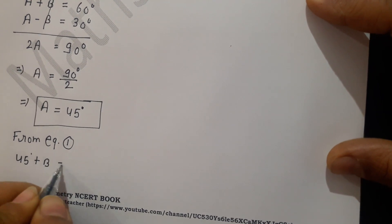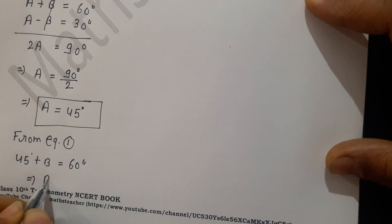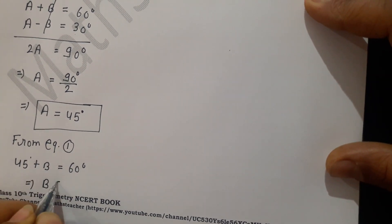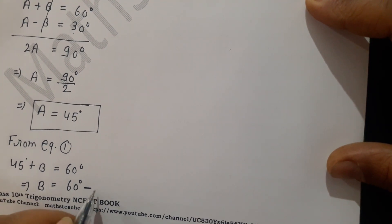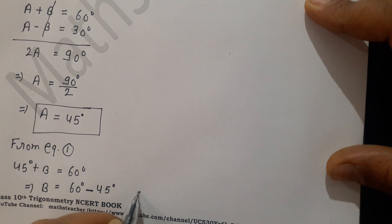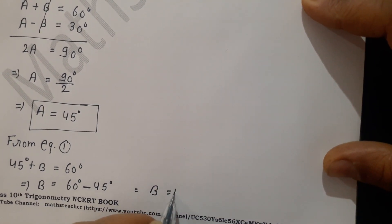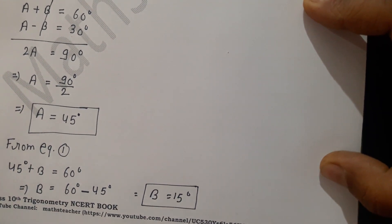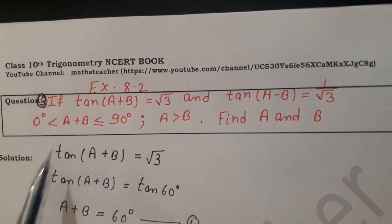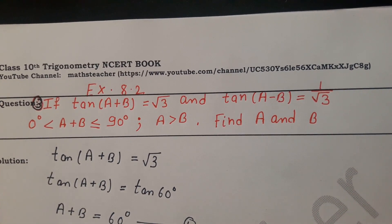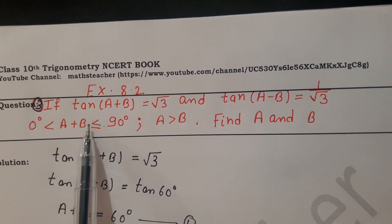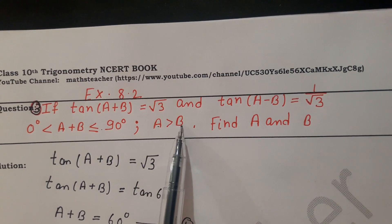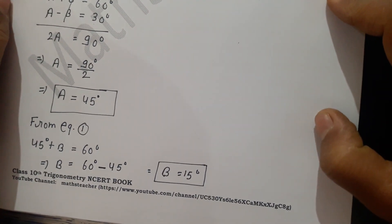Now substituting A = 45° into Equation 1: A + B = 60°, so 45° + B = 60°, which gives B = 15°. Therefore, A = 45° and B = 15°. Thank you.